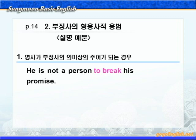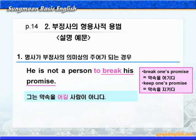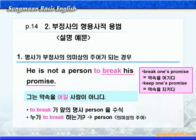다음 예문입니다. 'He is not a person to break his promise.' 그는 사람이 아니다, 어떤 사람이냐면 'to break his promise'. 'break one's promise'하면 약속을 어기다는 뜻입니다. 'keep one's promise'를 쓰면 약속을 지키다가 됩니다. 해석을 정리하면 '그는 약속을 어길 사람이 아니다.' 'not a person to break his promise'에서 'to break'가 앞에 명사인 'person'을 수식하고 있습니다.